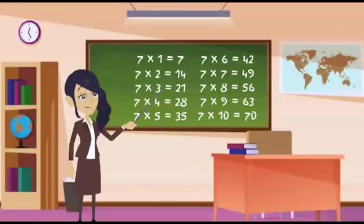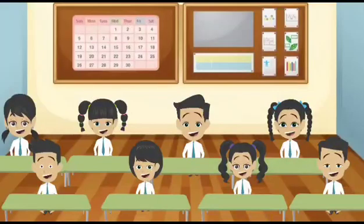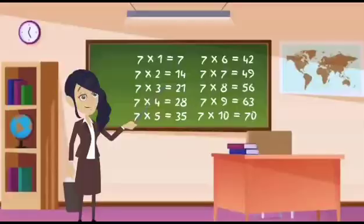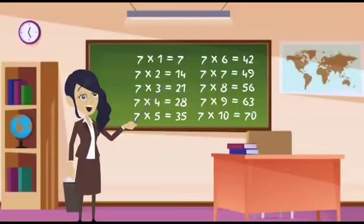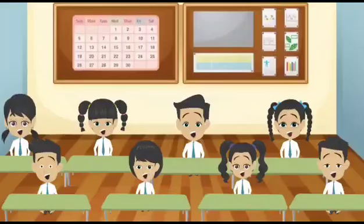Let's do this again together. 7 1's are 7. 7 2's are 14. 7 3's are 21.